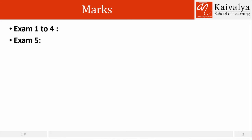Let us first understand the marks allocated to this particular topic. For examinations 1 to 4, it would have 3 to 4 marks, and as far as exam 5 is concerned, it would have 4 marks. This topic is very important — you can expect a couple of questions on loans in exams 1 to 4, and at least one question in examination 5, possibly two in both case studies. So we simply cannot afford to ignore this topic.